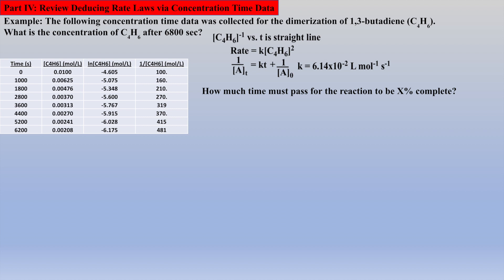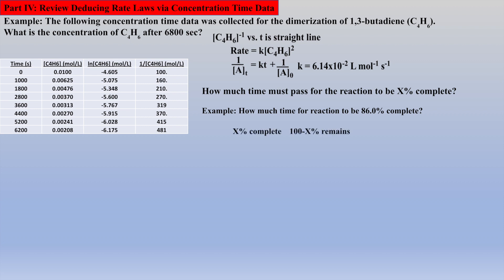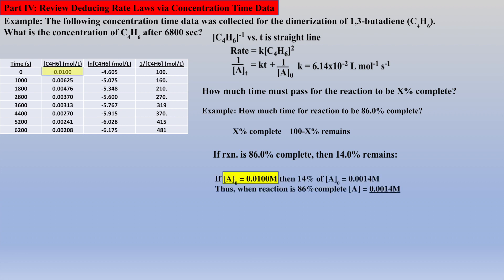Another type of question the student should be prepared to answer could be: how much time needs to pass for a reaction to be x percent complete given some time and concentration data? First, the student will still have to linearize the time concentration data to deduce the kinetics of the reaction, employ the correct integrated rate law equation, and calculate the rate constant, which have already previously been accomplished. For example, how much time needs to pass for the reaction to be 86 percent complete? The key here is to recognize that if the reaction is x percent complete, then 100 minus x percent remains, which is 14 percent. Thus, if the initial concentration was 0.0100 molar, then when the reaction is 86 percent complete, 14 percent remains, which is 0.0014 molar.